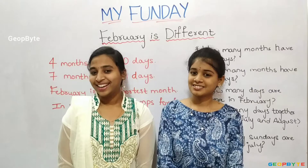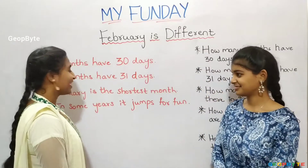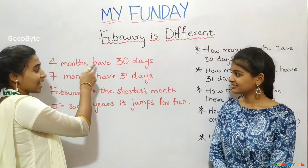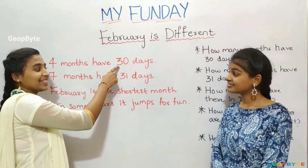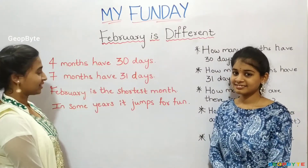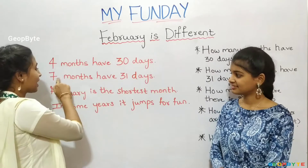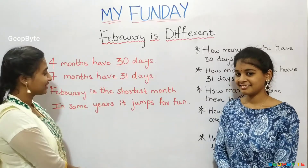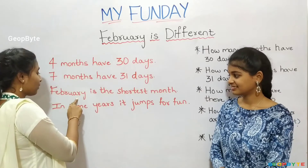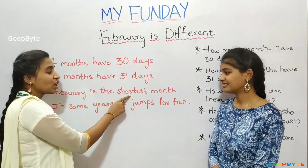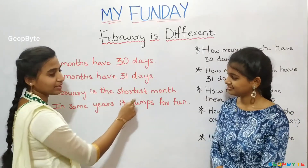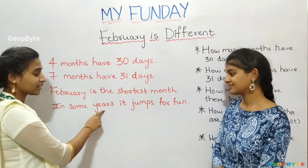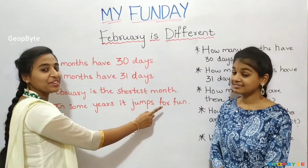Hey kids, see here. Four months have 30 days. Seven months have 31 days. February is the shortest month — in every four years, it jumps for fun.